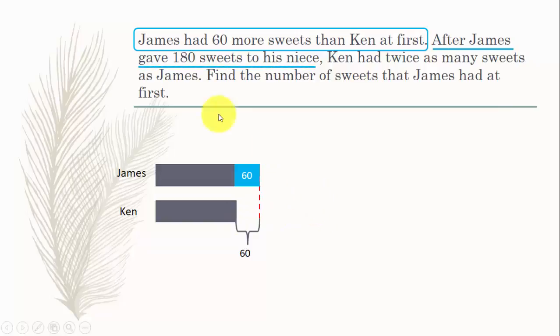Now after James gave 180 sweets to his niece, he's giving 180 which cannot be just the 60 plus additional amount as well. We're doing a rough estimate that it's going to be around here. This is 180. If this whole amount being given out is 180, this amount in addition to 60, this has to be 120. Because 120 plus 60 gives you 180.